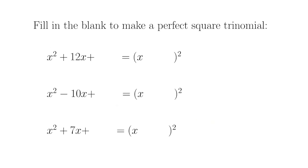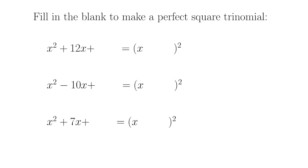Just to make sure we understand this, let's fill in the blanks here. x squared plus 12x plus what would make this a perfect square trinomial? Well, half of 12 is 6, and then 6 squared is 36. And the way this factors would then be x plus 6 squared.